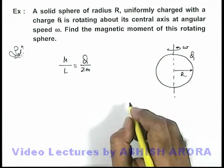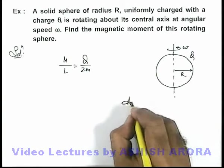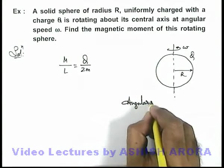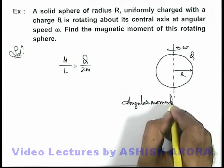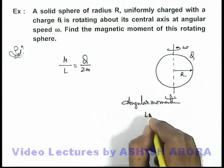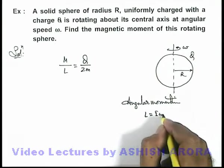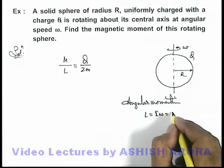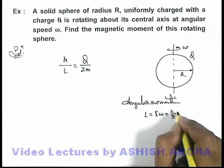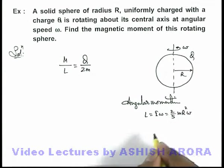And in this situation, we know well that angular momentum of this sphere is L which can be written as I omega. We can write the moment of inertia of sphere is 2 by 5 m R square, multiplied by omega.